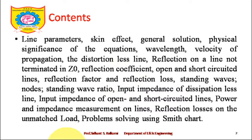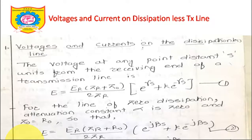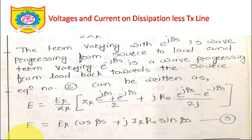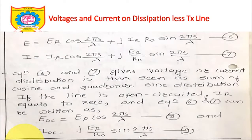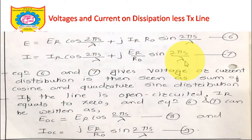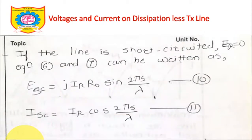Welcome back. In the previous lecture we started our discussion about short-circuited and open-circuited dissipationless transmission lines and came to the conclusion that we can represent voltage and current in terms of cos(2πs/λ) and sin(2πs/λ). We also found the expressions for open circuit voltage EOC, open circuit current IOC, and short circuit voltage and short circuit current.